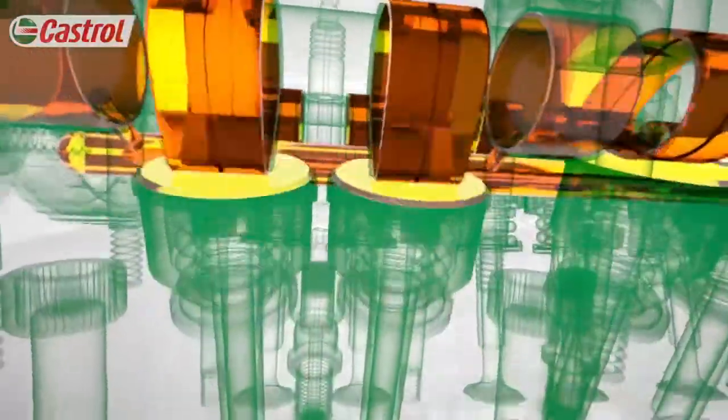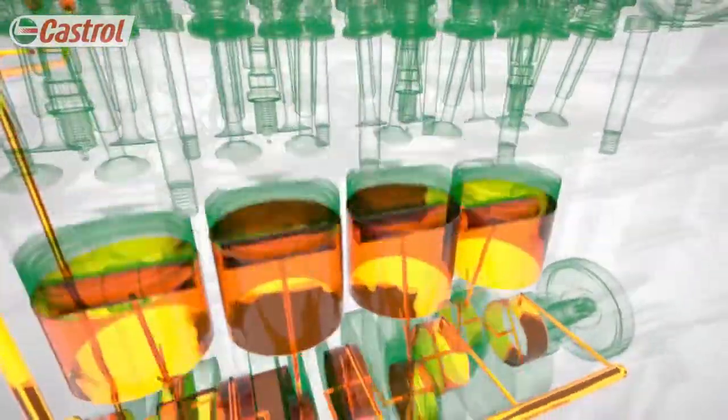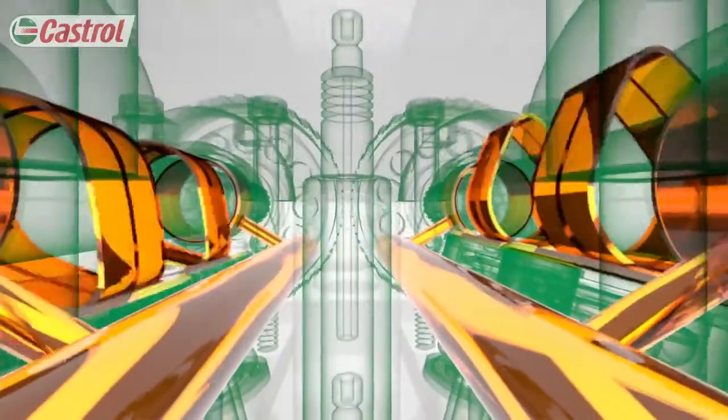Loads in the valve train are the highest in the engine. This is where the oil experiences the most stress. To avoid friction and damaging wear, these fast-moving metal components must be lubricated. The oil is the only thing preventing metal-to-metal contact.